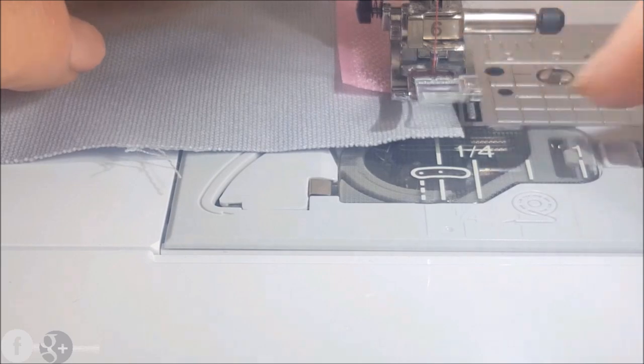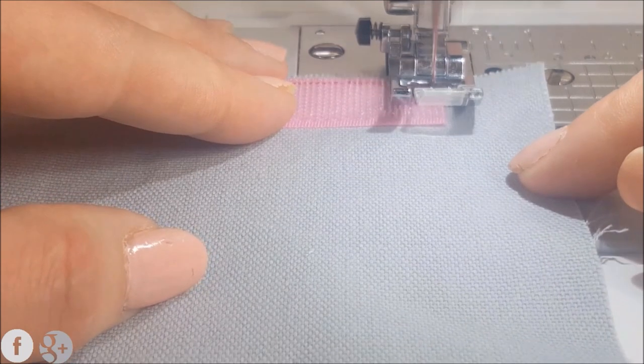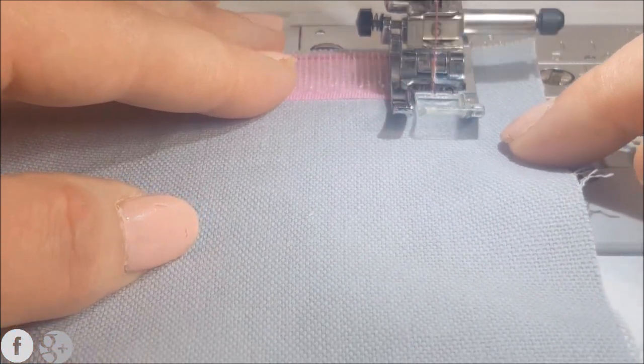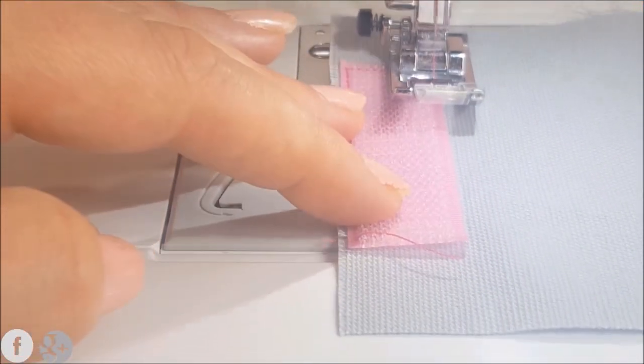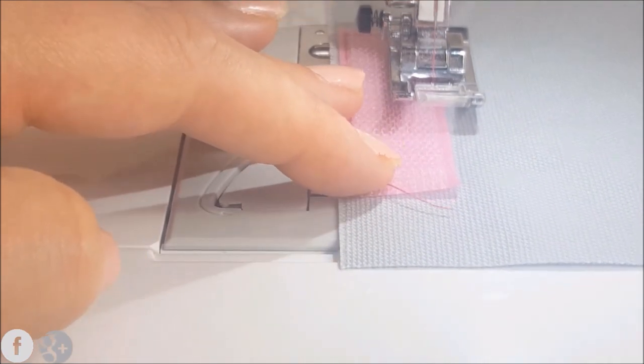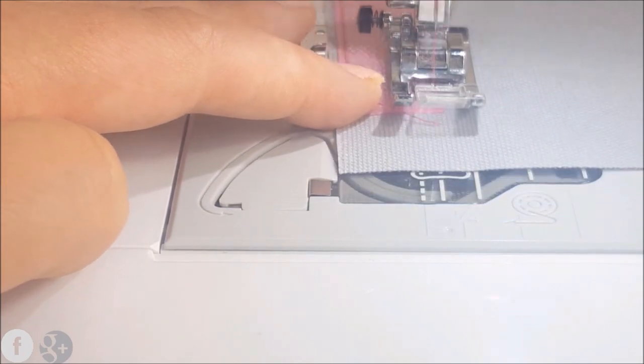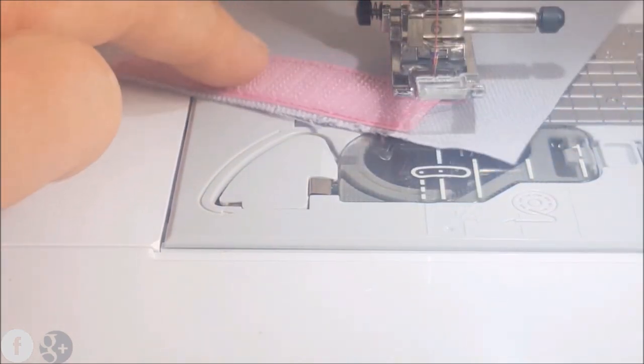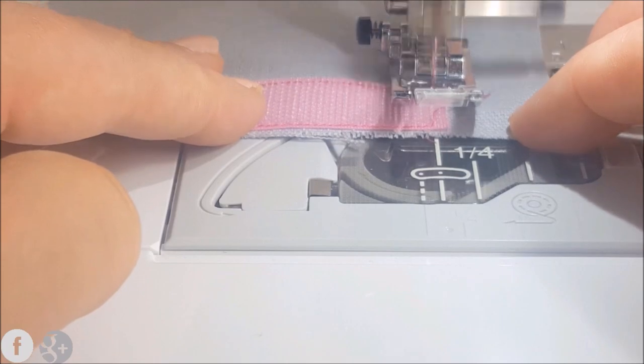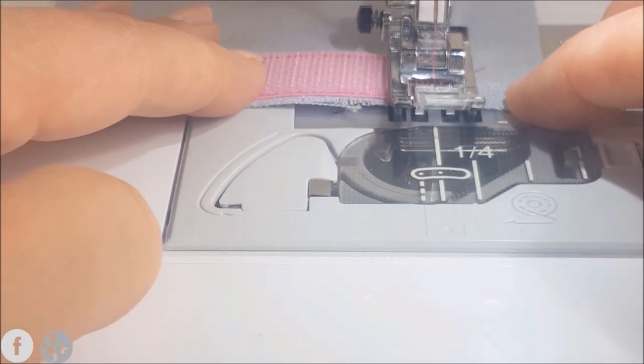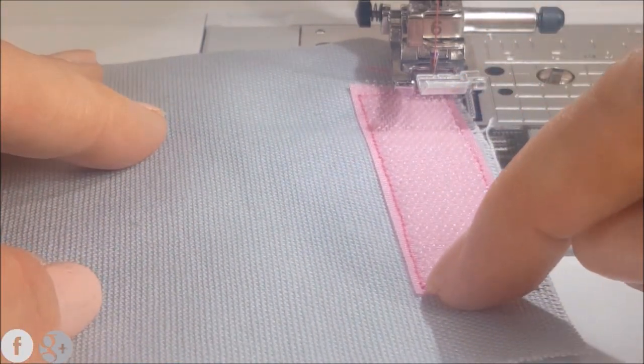It stops in the downward position and we're going to pivot at each corner. Now we've come to that corner and we want to go diagonally across the velcro.